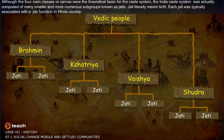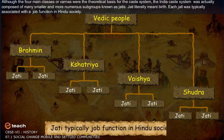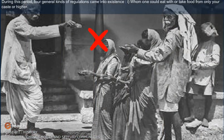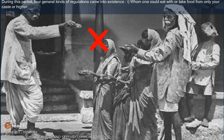Although the four main classes or Varnas were the theoretical basis for the caste system, the Indian caste system was actually composed of many smaller and more numerous subgroups known as Jatis. Jati literally means birth. Each Jati typically had a job function in Hindu society. During this period, four general kinds of regulations came into existence — the first being whom one could eat with or take food from, limited to your caste or higher.